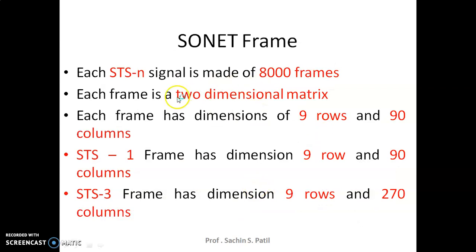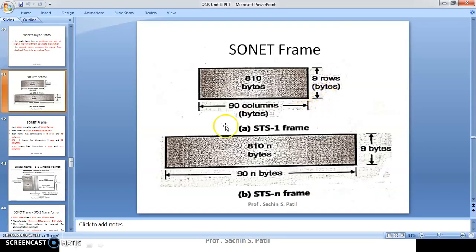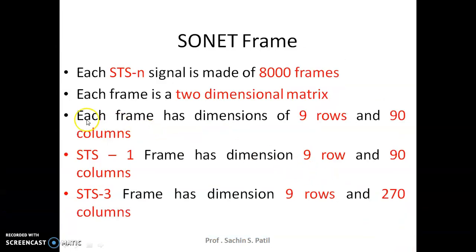Each STS-1 signal is made up of 8000 frames. Each frame is a two-dimensional matrix with dimensions of 9 rows by 90 columns. The STS-1 frame has dimensions 9 rows × 90 columns, and STS-3 has dimensions 9 rows × 270 columns.